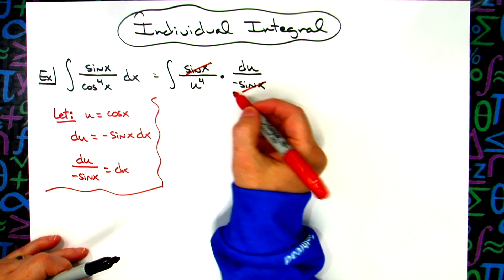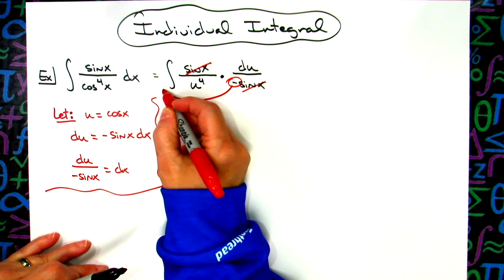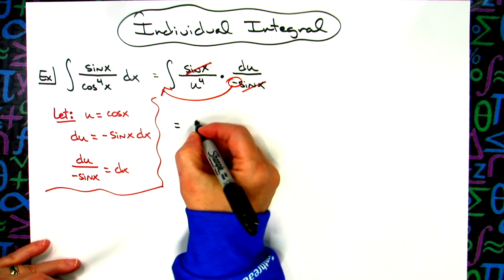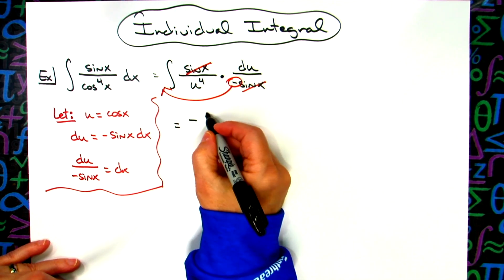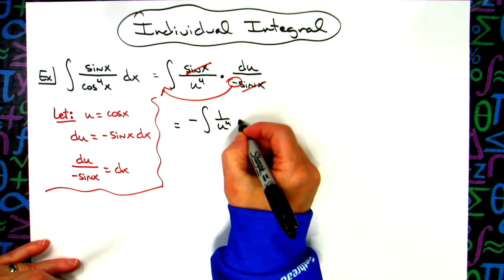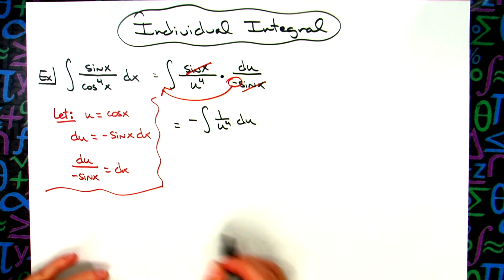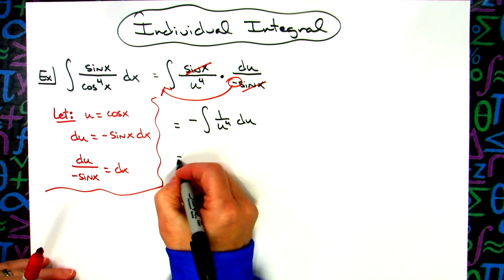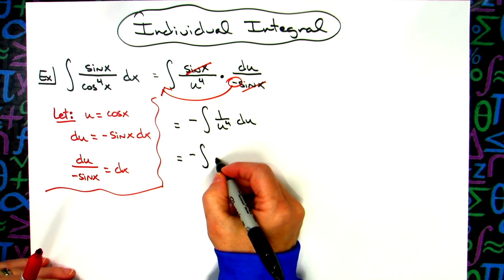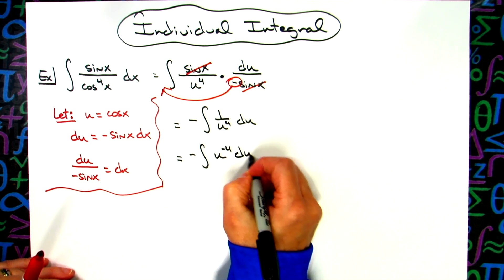So I'll have the integral. I'm going to have that sine x remain on top. On the bottom, since cosine is u, we're going to have u to the fourth power. And then we're going to change that dx for what it equals — du over negative sine x. That's going to allow us to cross out those sine x's.